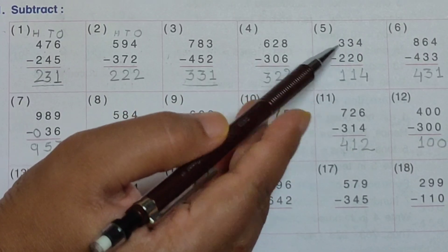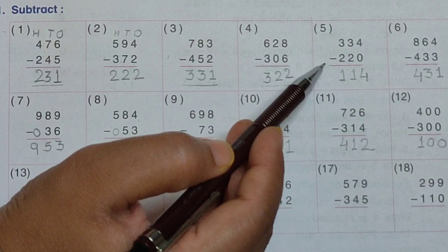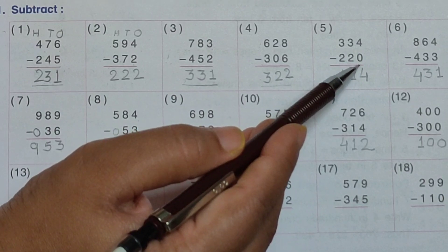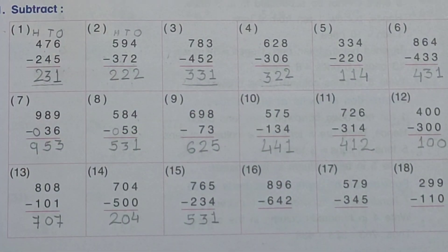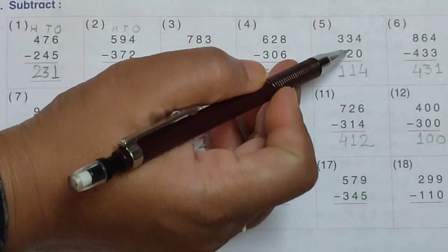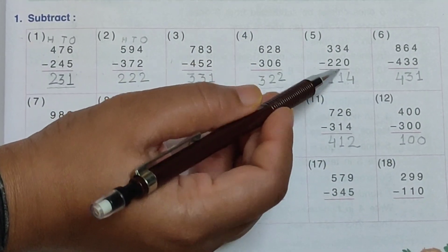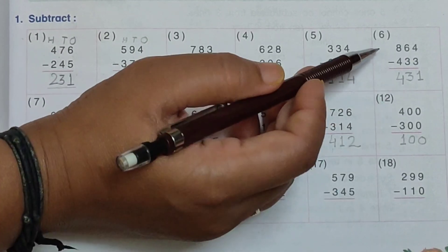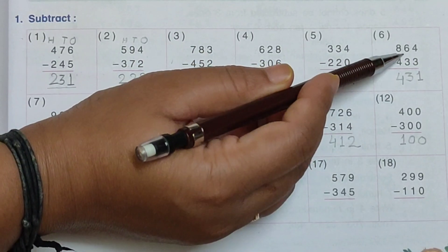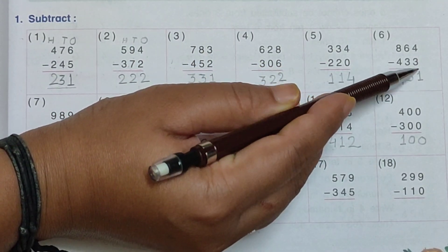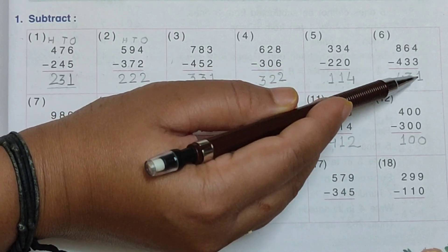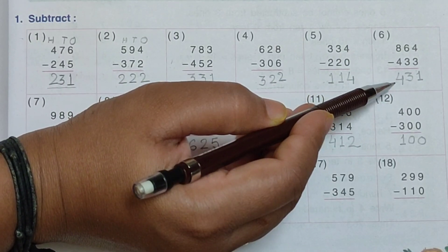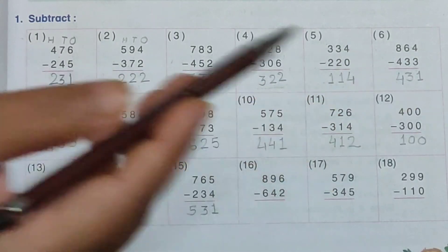See the fifth one — ones, tens and hundreds. Three hundred and thirty-four minus two hundred and twenty. Ones place: four minus zero equals four — any number subtracted by zero gives the same number. Tens: three minus two equals one. Your answer is one hundred and forty. Sixth one: 864 minus 433. Four minus three equals one, six minus three equals three, eight minus four equals four. Answer is four hundred and thirty-one.